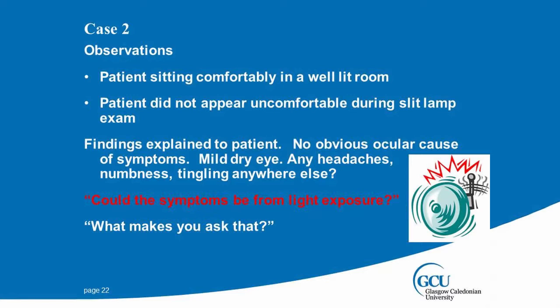Everything apart from slightly dry eye checked out fine — I did gonioscopy, everything was absolutely fine. But I had to go back and ask again because something wasn't ringing true. She was sitting comfortably throughout in my test room with bright strip lights telling me about her photophobia, and she'd sat through a slit lamp examination without reacting. Something wasn't right. I'm thinking neurological. I said, apart from mild dry eye I can't find anything — do you have any numbness, tingling? She said: could the symptoms be from light exposure?